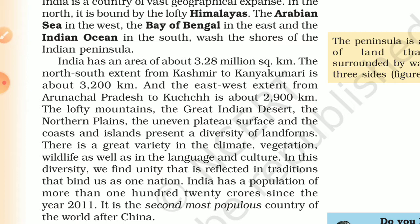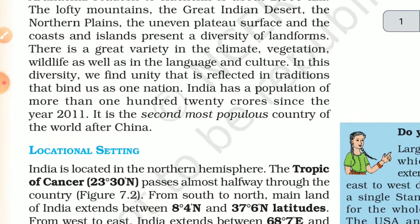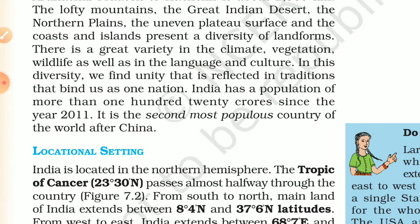The lofty mountains, the great Indian desert in Rajasthan, the northern plains, the uneven plateau surface, the coasts, and the islands present a diversity of landforms. India also has great diversity in climate, vegetation, and wildlife, as well as in language and culture.